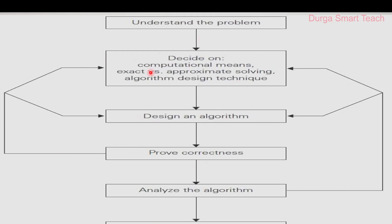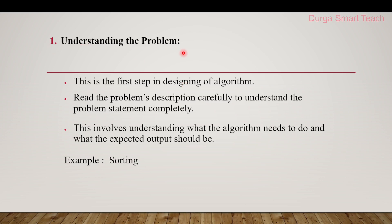The first step is understanding the problem. Read the problem description carefully to understand the problem statement correctly. This step involves understanding what the algorithm needs to do and what the expected output should be — knowing what is the input and what is the expected output. For example, if an algorithm is required to sort a list of numbers, that is known as sorting — arranging elements in ascending or descending order.